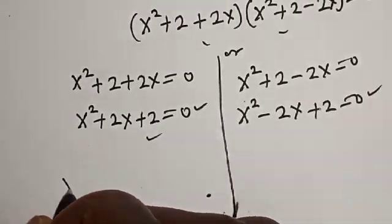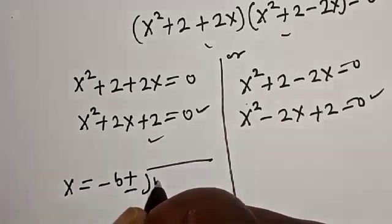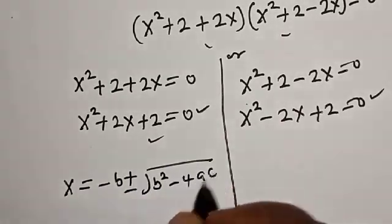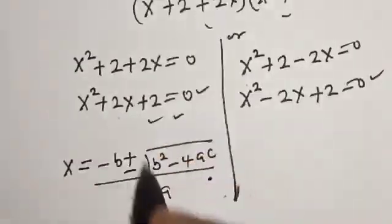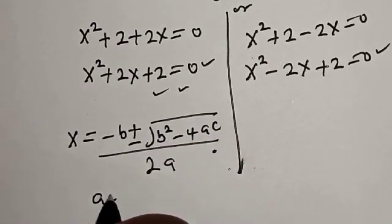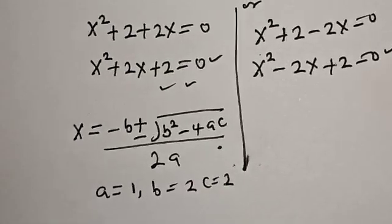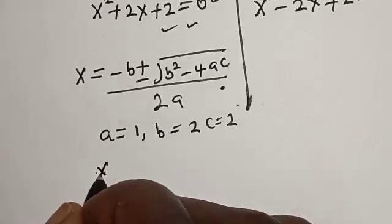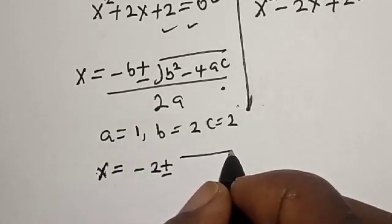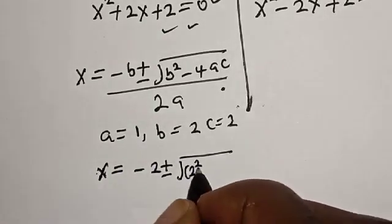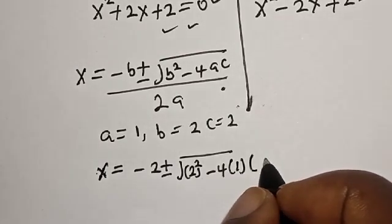We use the quadratic formula: s is equal to minus b plus or minus square root of b² minus 4ac, divided by 2a. From this equation, a is equal to 1, b is equal to 2, and c is equal to 2. Let's substitute: s is equal to minus 2 plus or minus square root of 2² minus 4 multiplied by 1 multiplied by 2.